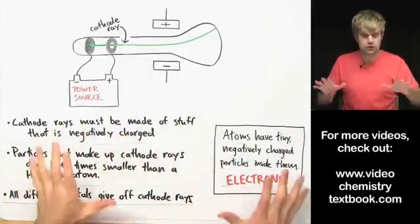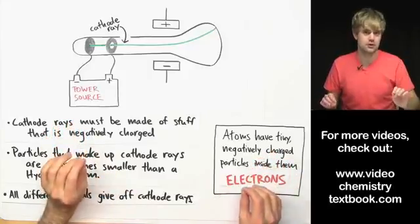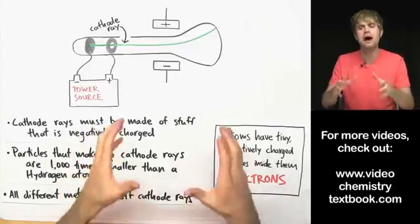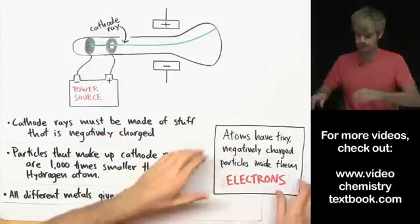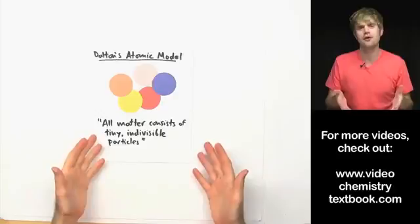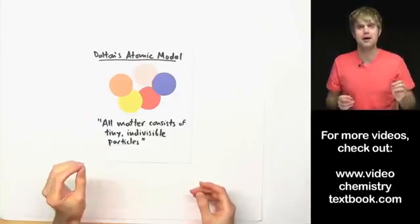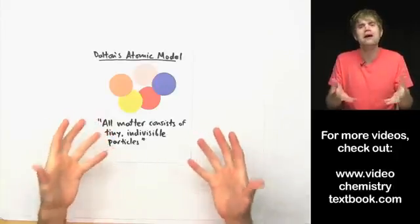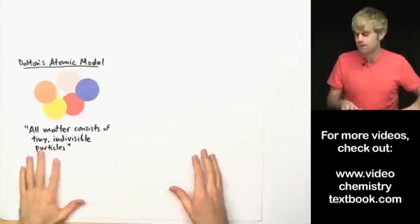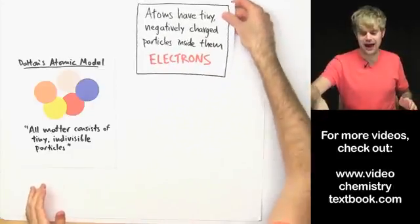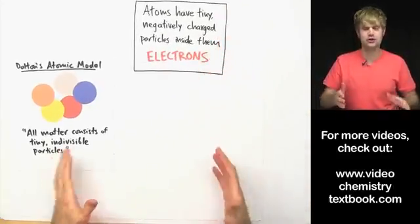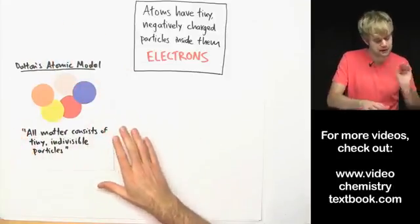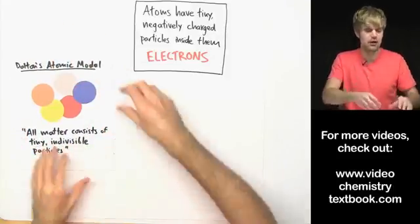These conclusions that Thompson comes to have dramatic effects on how scientists think about what the atom actually looks like. Now, at the beginning of the video, we said that in Dalton's atomic model, atoms are indivisible, that they're not made of anything smaller. But when Thompson discovered that atoms have tiny negatively charged electrons inside them, he essentially disproved this model, at least the part about the indivisible atoms.